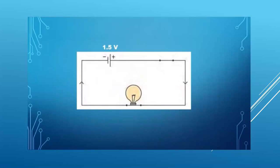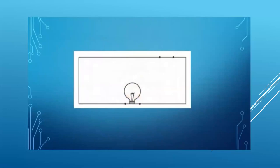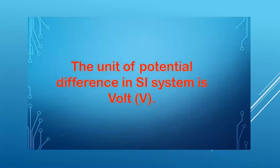Electrons flow from the negative terminal of the cell to the positive terminal of the cell. Conventional current flows in the opposite direction, shown in the figure by an arrow sign. In this figure there is no current as there is no potential difference in the absence of any cell. Current starts flowing in the circuit as soon as the potential difference is applied. The unit of potential difference in the SI system is volt, denoted by symbol V.